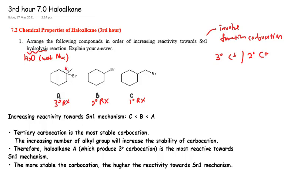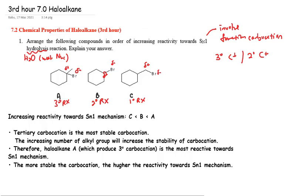It would be good to label the electrophilic site — the delta-positive carbon — and the delta-negative leaving group for every compound, so we know exactly where the electrophilic site and leaving group are. We want to arrange the reactivity towards SN1 in increasing order: the least reactive is the primary haloalkane, structure C, followed by B, and the most reactive is structure A, the tertiary haloalkane.